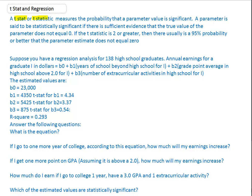The t-stat or t-statistic measures the probability that a parameter value is significant. This doesn't mean that it's important, it just means that it's very probably different than zero. A parameter is said to be statistically significant if there's sufficient evidence that the true value does not equal zero. Zero would mean that the parameter, or that x value, has no effect.